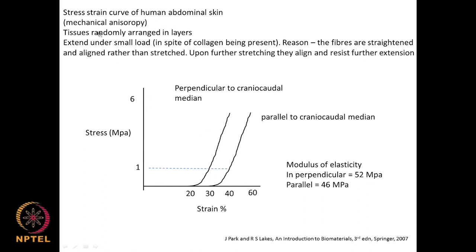This is called mechanical anisotropy. When the load is applied perpendicular versus parallel, we get two different stress-strain diagrams because the tissues are randomly arranged in layers. The material extends under small load because the fibers get straightened and aligned rather than stretched, and upon further stretching the aligned fibers resist the tension.